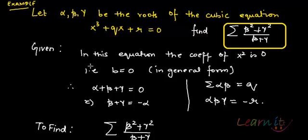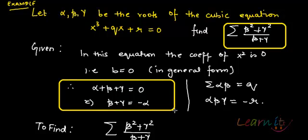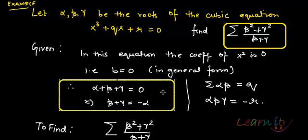We need to figure out the value of this expression. The equation is such that the coefficient of x² is 0, so in the general form that coefficient equals 0. This gives us that the sum of the roots — by the relationship between roots and equation — alpha + beta + gamma = 0. So I can write beta + gamma as minus alpha.